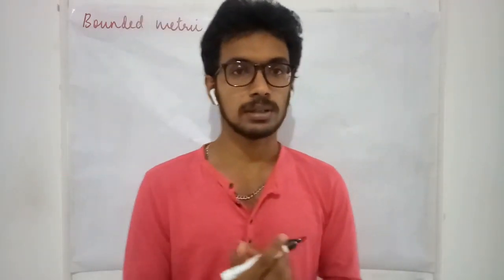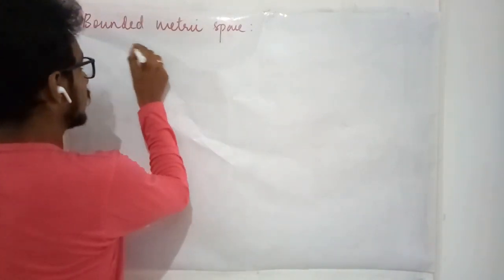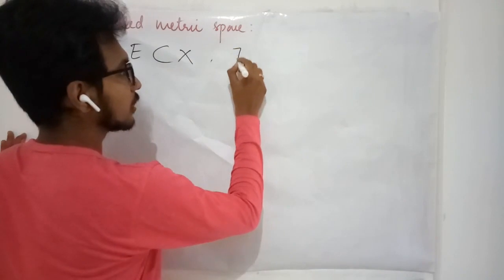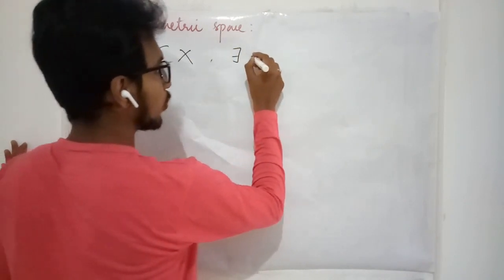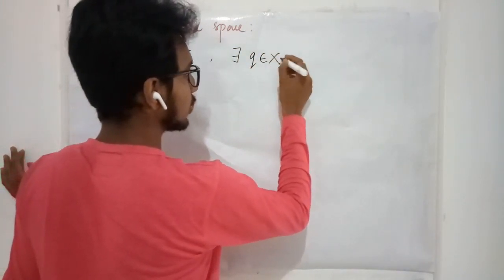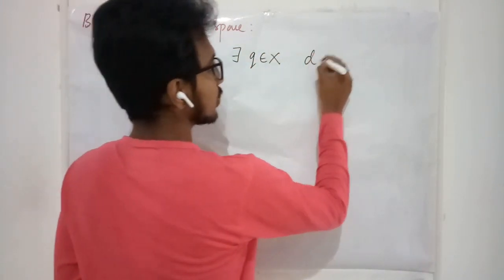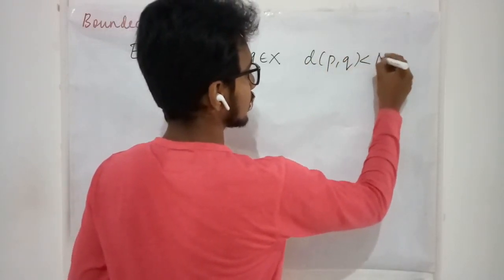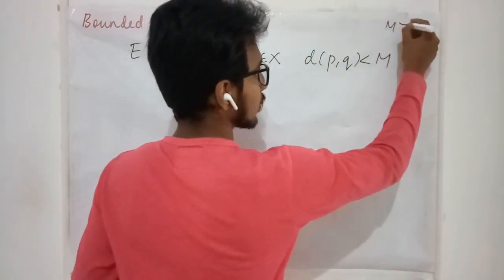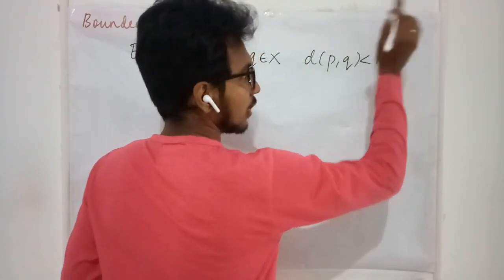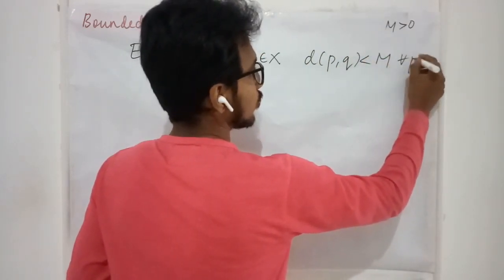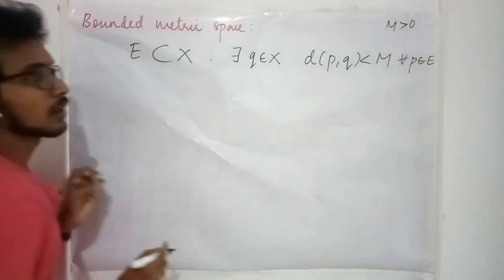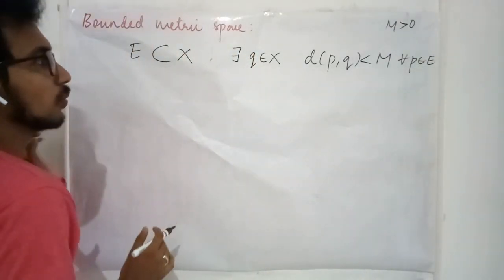A set E of a metric space is said to be bounded if there exists a point in the metric space such that the distance of this point is less than some positive quantity — for some real number M — and this has to be true for all elements in the set.